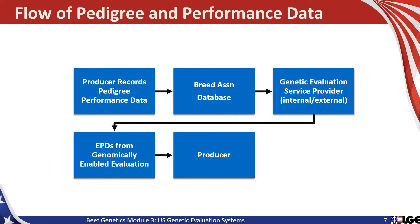As we consider our genetic evaluation system, it's important to recognize that the data makes a number of stops from its origin at a seed stock producer and then ultimately into the hands of another seed stock or commercial producer for use in selection. The first stop for many of these records is data collection on the farm or ranch. Those records are processed online or delivered via paper records to the Breed Association for inclusion in their database. The Breed Association then moves that information through a series of quality control steps and ultimately into a data extract used by a genetic evaluation service provider.